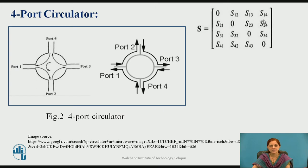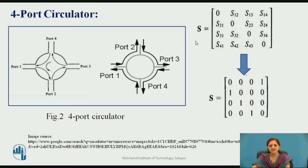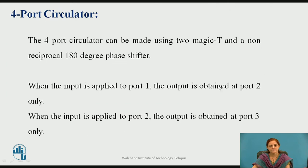The scattering parameters S21, S12, S13, S14, S23, S24, S31, S32, S34, S41, S42, and S43 are defined, with the remaining diagonal elements equal to 0. The 4-port circulator can also be made using 2 magic-T junctions and a non-reciprocal 180-degree phase shifter. When input is applied to port 1, output is obtained at port 2 only; when input is applied to port 2, output is obtained at port 3 only. Similarly for ports 3 and 4 as input.